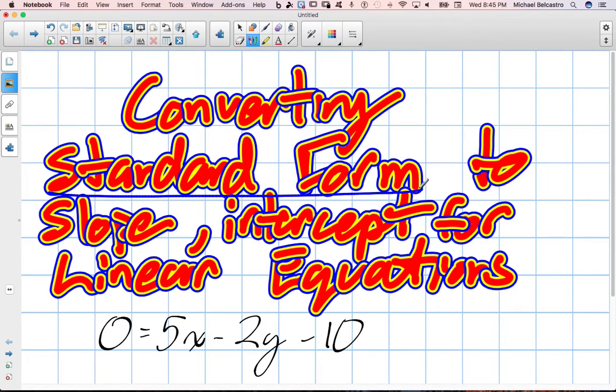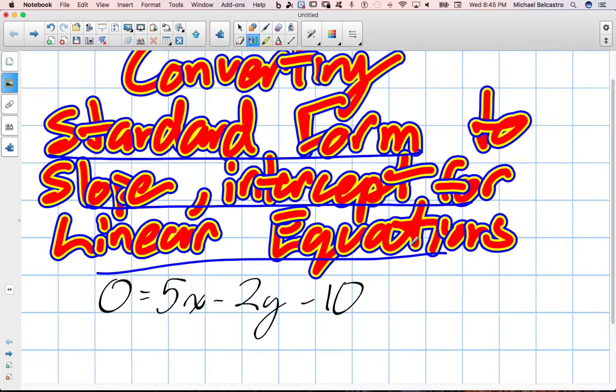I've got converting standard form to slope-intercept for linear equations. Very long title. What does that mean?